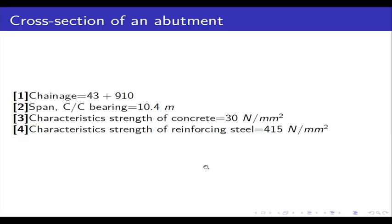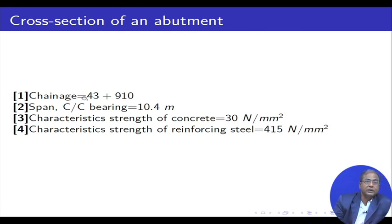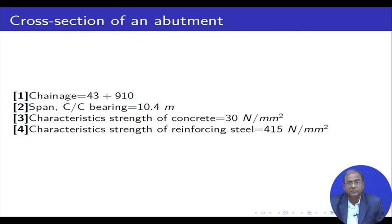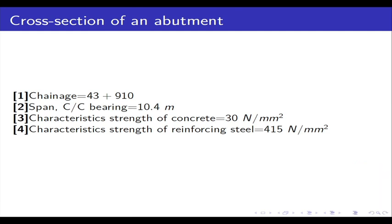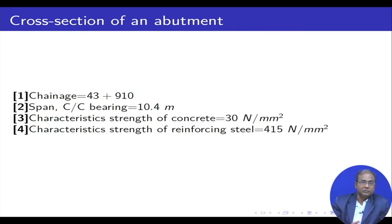Before coming back to that, let me take the bridge data. It is very important to classify the chainage — the location from which the bridge actually starts. The chainage is 43+910, meaning 43 kilometers plus 910 meters, so almost near 44 kilometers — that is where the bridge is being constructed.